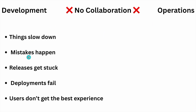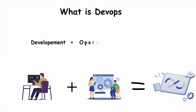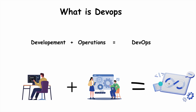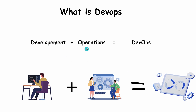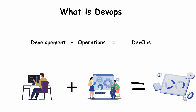Things slow down, mistakes happen, releases get stuck, deployments fail, and users don't get the best experience. DevOps came in to fix this. It's not just a tool — it's a culture shift. Instead of developers and operations working separately, DevOps brings them together as one team. DevOps is a combination of development and operations — a culture, a set of practices, and a way of working that helps development and operations teams work together better.